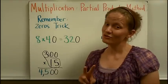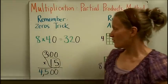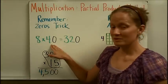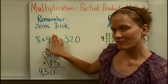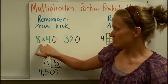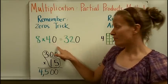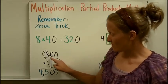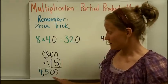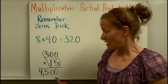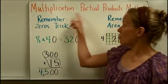Before we start that method, we have two things that we must remember. First, we have to remember the zero trick from our previous video. When we have numbers and one of them is a multiple of ten, we can forget the zero for a minute, multiply the first two digits — so eight times four is thirty-two — and then add the same number of zeros to the end of our product. Here's another example: three times fifteen is forty-five, and my problem had two zeros, so I put two zeros in my answer. We're going to use this zeros trick in our partial products method.